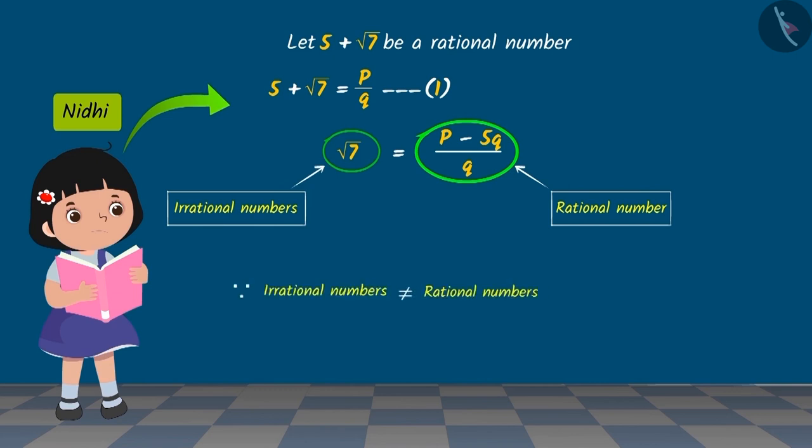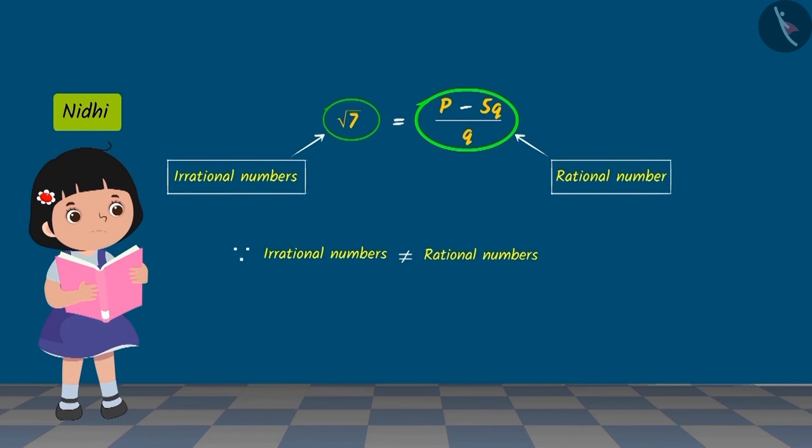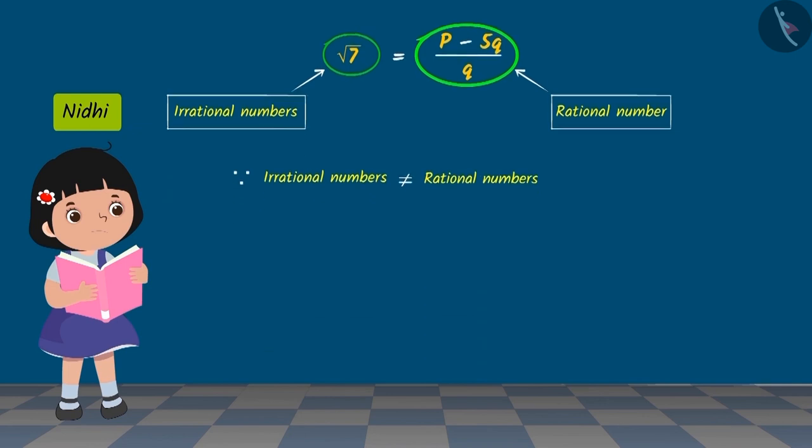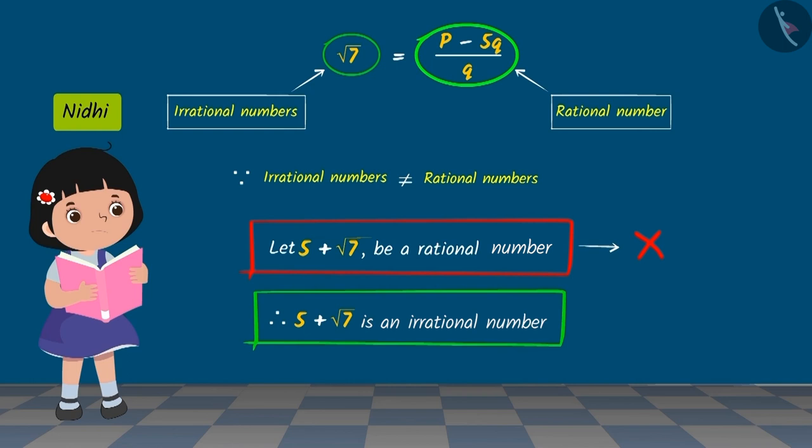But this is impossible because irrational numbers cannot be equal to rational numbers. Hence, Nidhi tells Riddhi that the assumption that 5 plus square root of 7 is a rational number is wrong because what we have obtained here is contradictory to it. Hence, we can say that 5 plus square root of 7 is an irrational number.